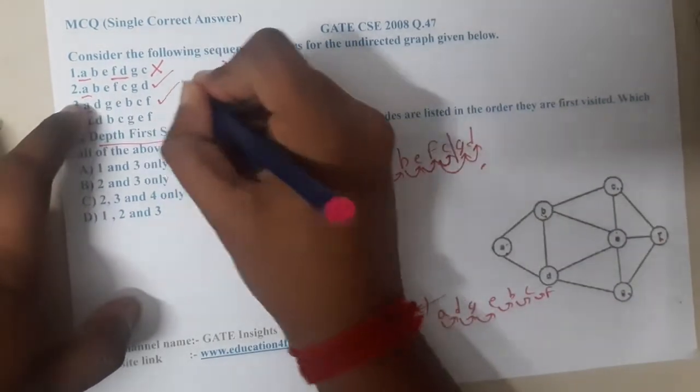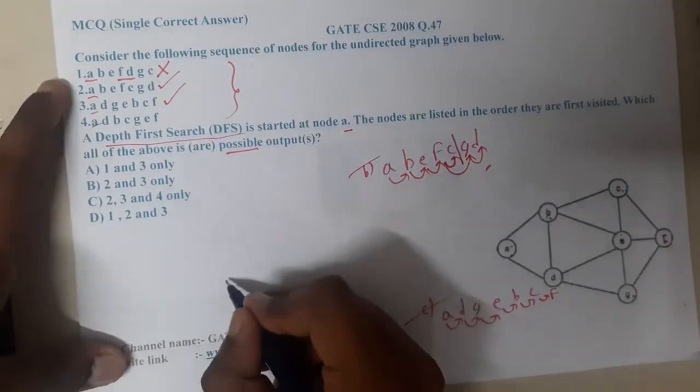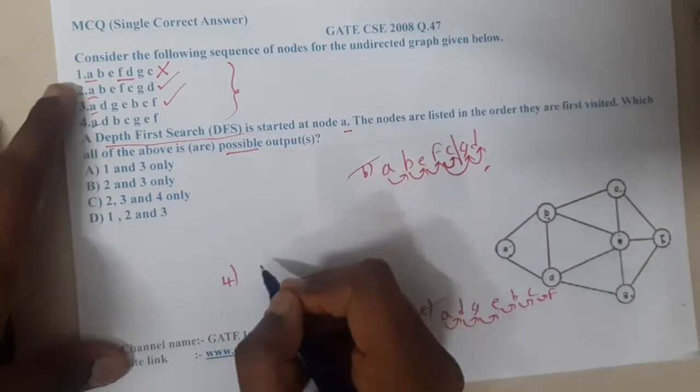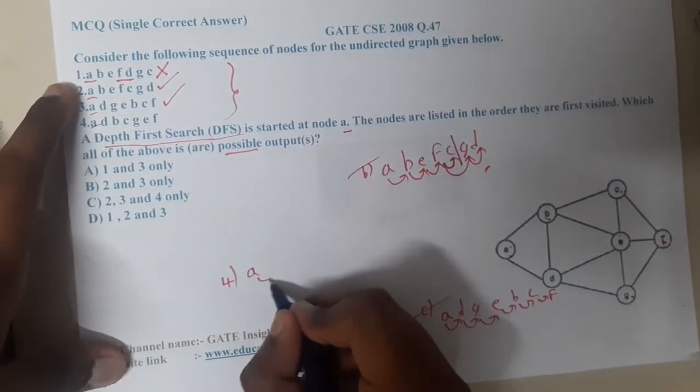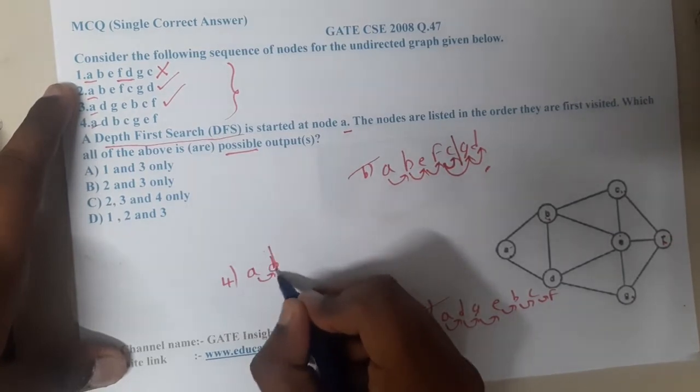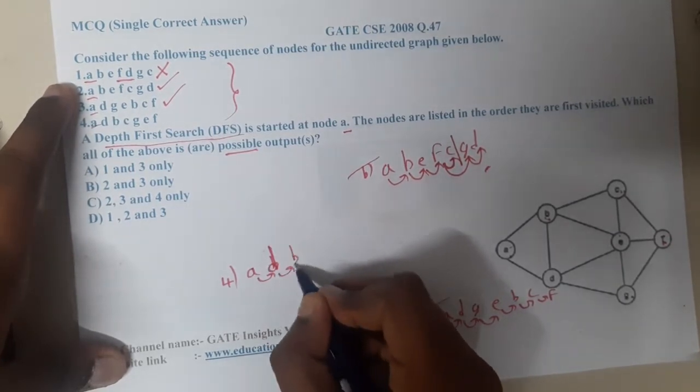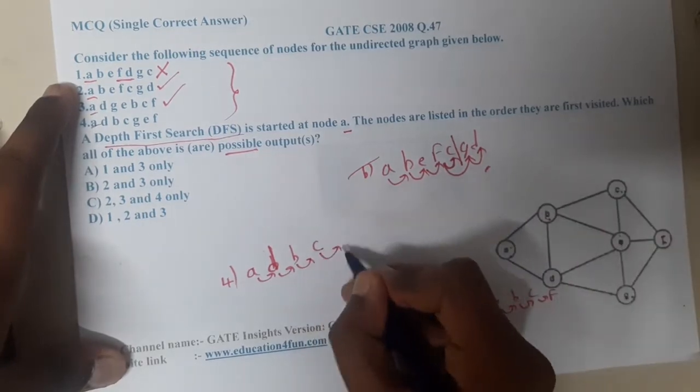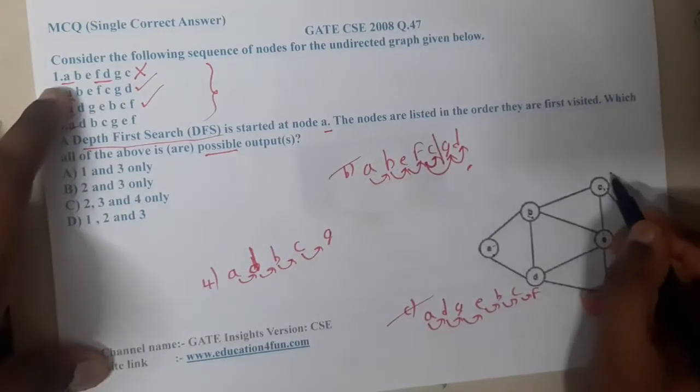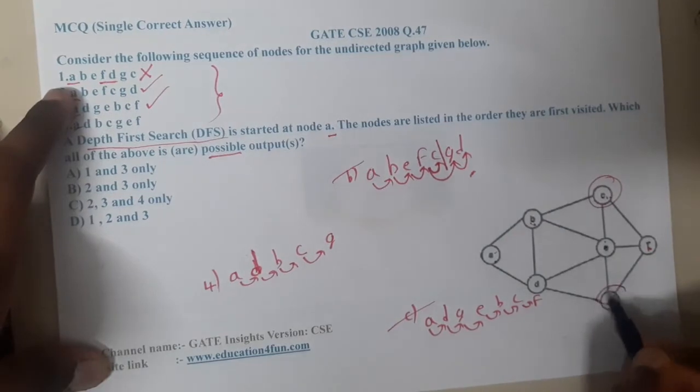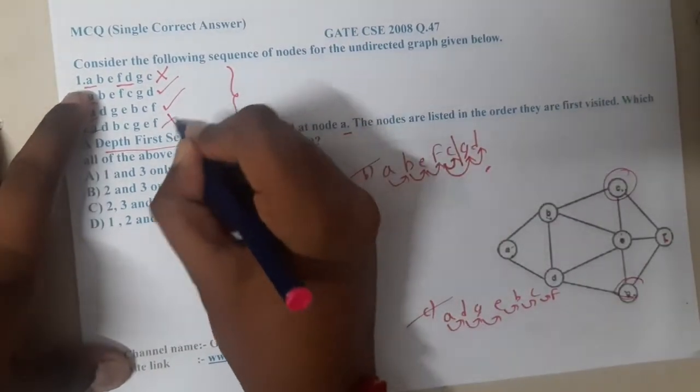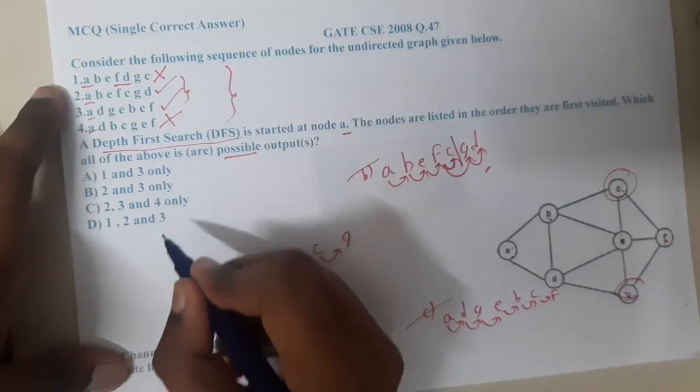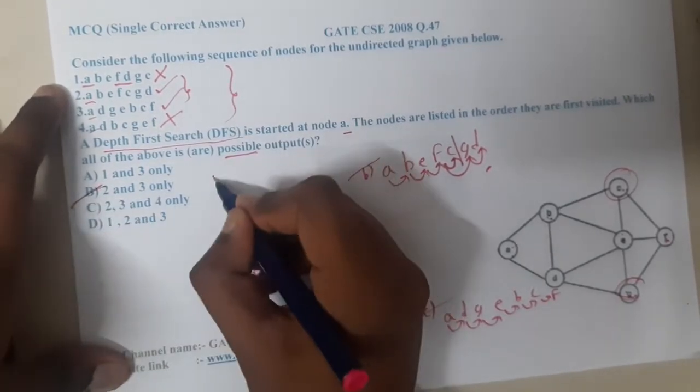Now let us take the last option four, the order d. From a you went to d, from d you came to b, from b you went to c. So from c you went to g. So from c how you can go to g guys? Are you doing long jumps? It's not correct, right? So this is also wrong. So the correct answers are two and three. So where two and three is there? B is the correct answer.